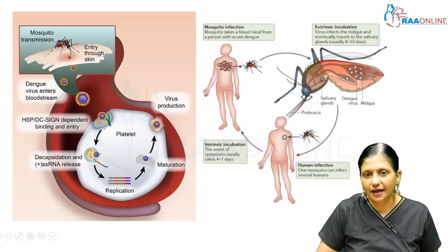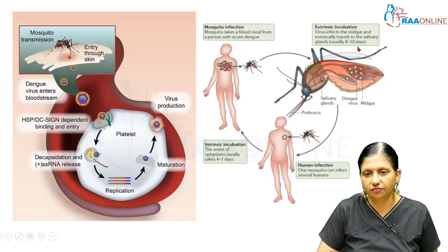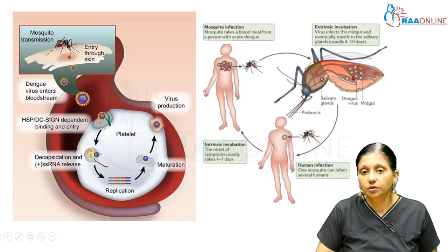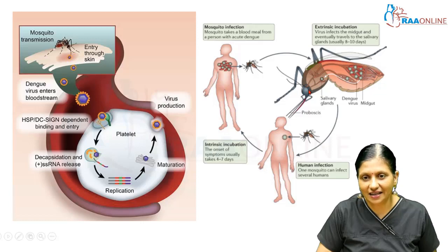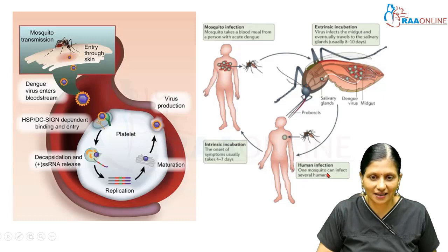The bite of the mosquito leads to a period of extrinsic incubation during which the virus infects the midgut and eventually travels to the salivary gland, taking around 8 to 10 days. After maturing in the midgut of the Aedes aegypti mosquito, the virus reaches the salivary glands, and when the mosquito bites a person, human infection occurs. One mosquito can infect several humans.